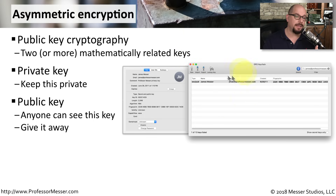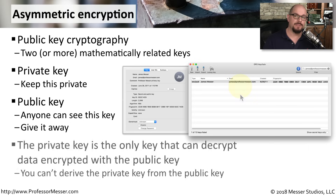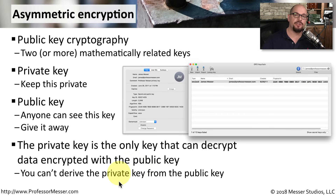In many cases, people will put their public key on a public key server so that you can search their email address and retrieve their public key in return. The secret to asymmetric encryption is that the only way to decrypt any data that has been created with the public key is if you have the private key. Once information has been encrypted using the public key, nobody else can decrypt that information, even if they have access to the public key. This is the value of asymmetric encryption, and this is why we rely on it for so much security on the internet.